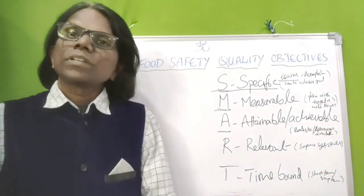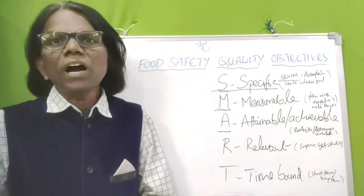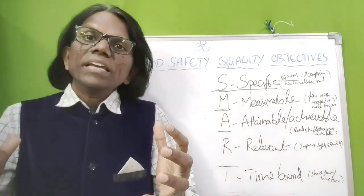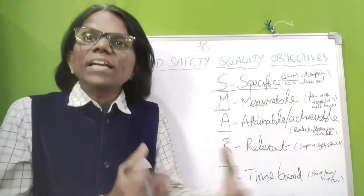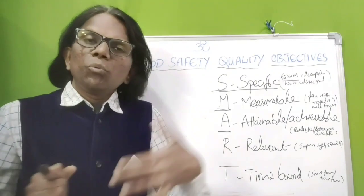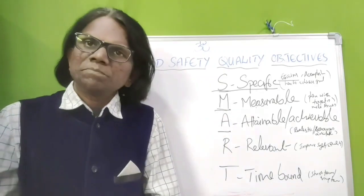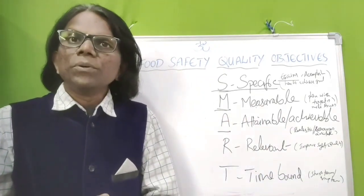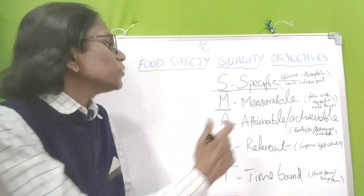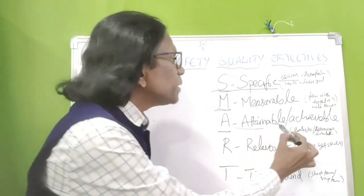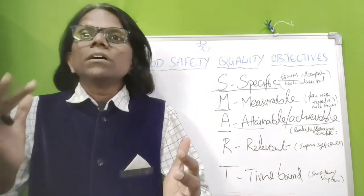Attainable or Achievable means the objective should be realistic. You should have the resources and competent people available. For example, if you want to improve the food safety quality consciousness of employees, you need adequate competent trainers. Any goal you establish should be achievable and realistic, with resources available.